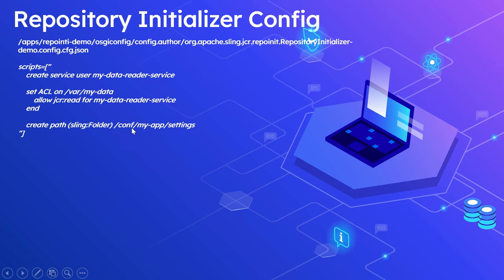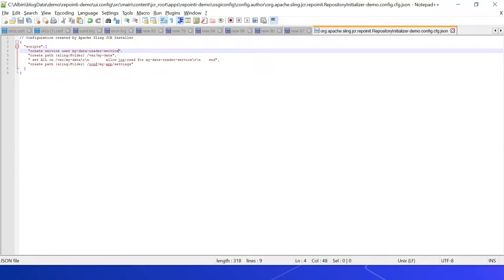Then creating a path /conf/myapp/settings with the node type sling:Folder. These scripts are executed early in the deployment process so that all the required configurations and content exist in the system before the actual code is executed. This is the content of the configuration file — individual scripts are comma separated, and individual lines are delimited with the newline delimiter.